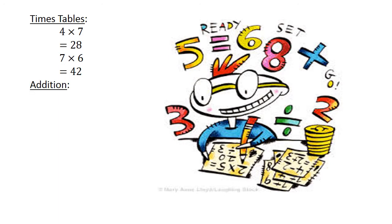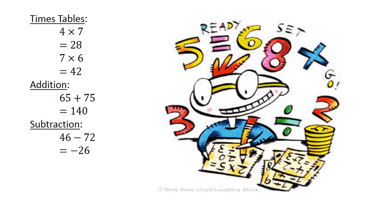Addition. 65 plus 75 equals 140. Subtraction: 46 minus 72 equals negative 26.